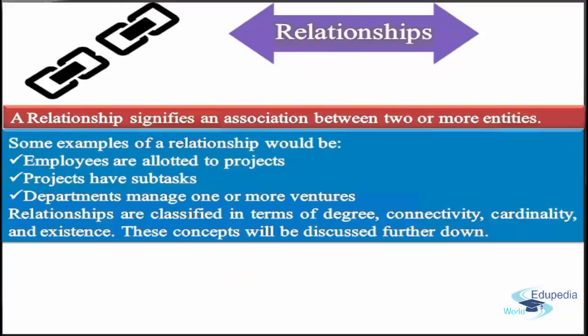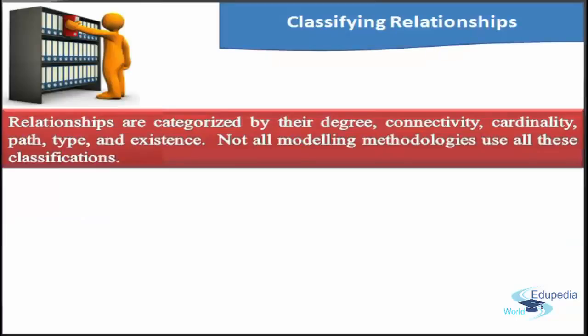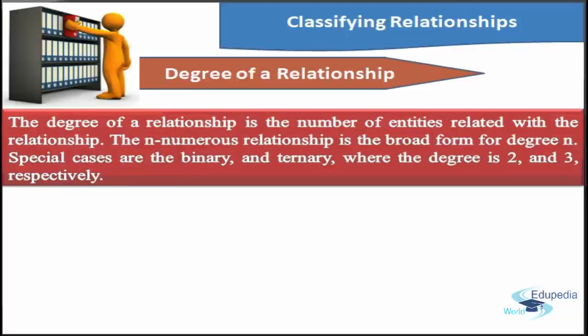Let us start with relationships. A relationship signifies an association between two or more entities. Some examples: employees are allotted to projects, projects have subtasks, and departments manage one or more ventures. Relationships are classified in terms of degree, connectivity, cardinality, path, type and existence. Not all modeling methodologies use all these classifications, and we will see a few of them.